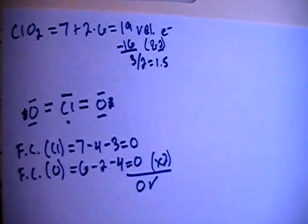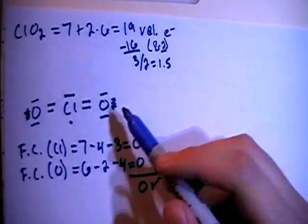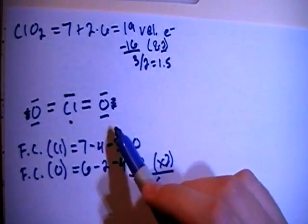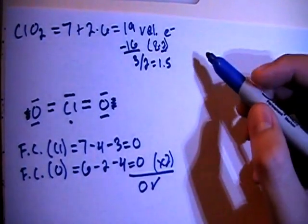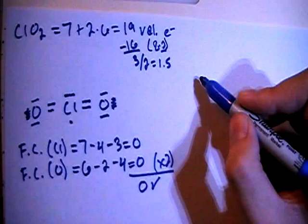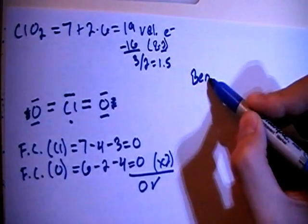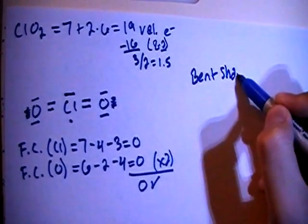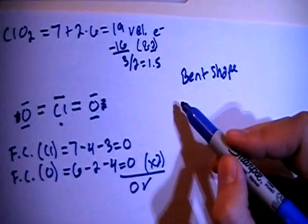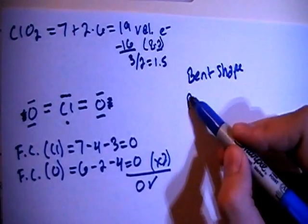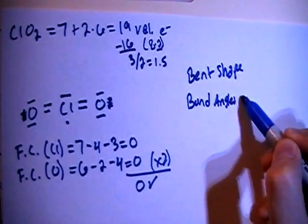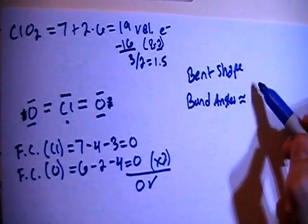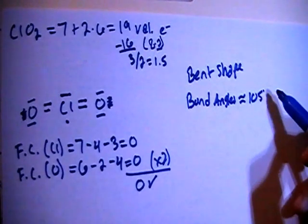We can talk about shape, because there's only the two peripheral atoms, and then the other bonding sites are non-bonding electron pairs. This is going to be a bent shape. And when you have bent shapes, the bond angles are typically approximately 105 degrees.